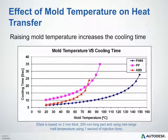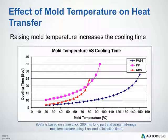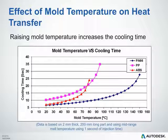Here we can see the effects of your mold temperature on heat transfer. Raising the mold temperature will generally increase the cooling time for your part. This graph compares a sample part — a simple plate, 2mm thick and 200mm long — using a mid-range melt temperature and a 1-second injection time. There is a general trend where increasing the mold temperature will increase your cycle time or cooling time. However, this can vary between materials such as PA66, polypropylene, and ABS, because the specific heat and thermal conductivity properties for these materials differ.